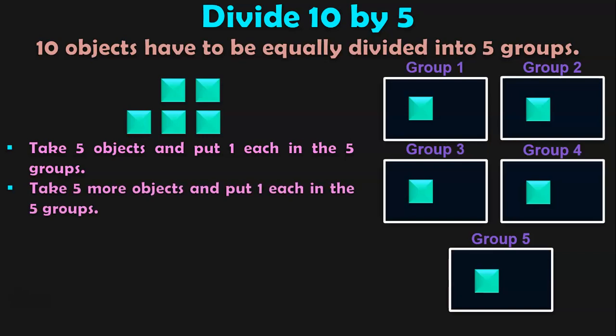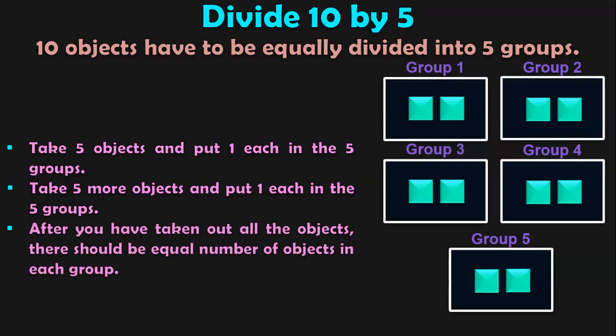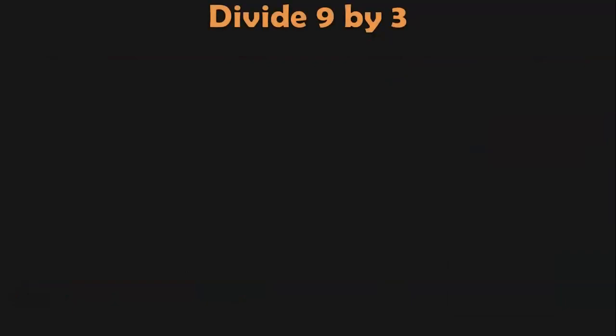The next step is to take the remaining 5 more objects and put 1 each in the 5 groups. After you have taken out all the objects, there should be equal number of objects in each group. There are 2 objects in each group. So when 10 is divided equally into 5 groups, the answer is 2. 10 divided by 5 equals 2.